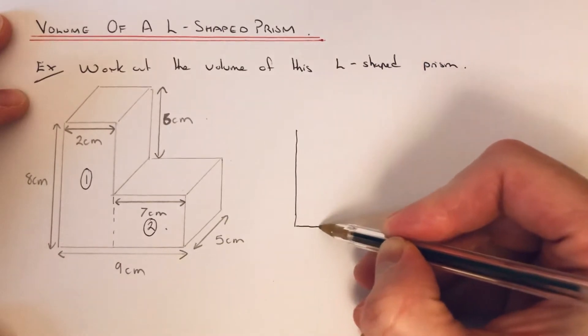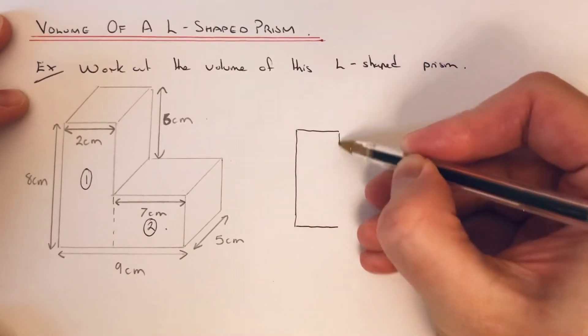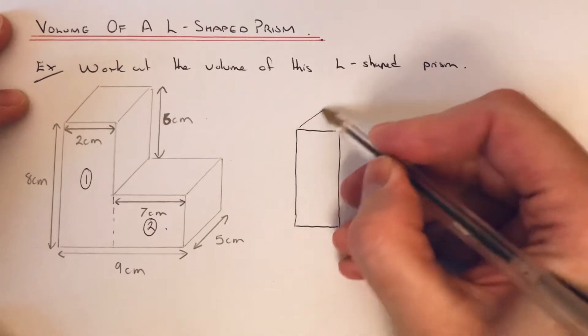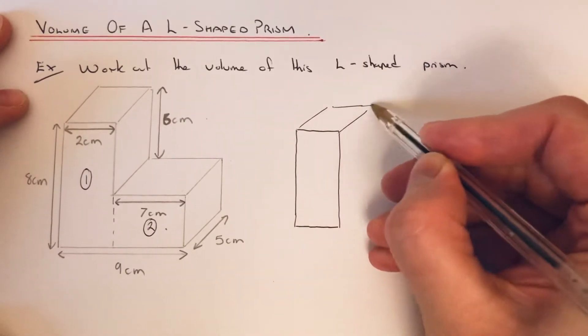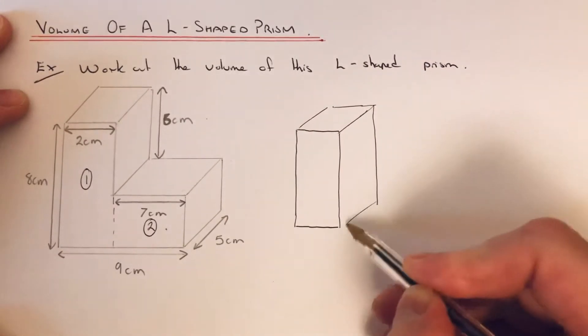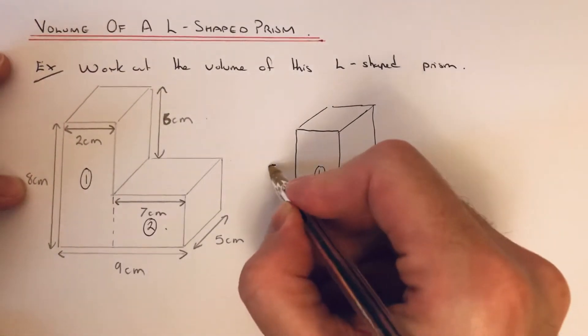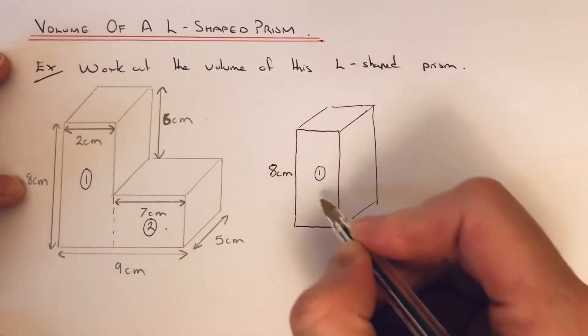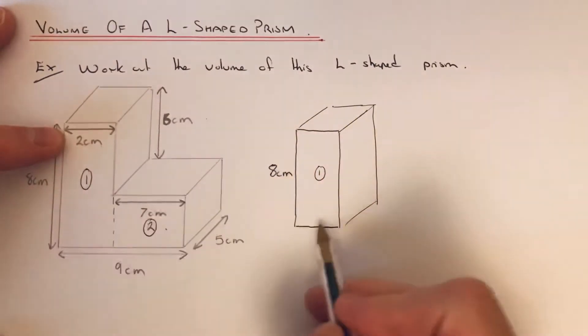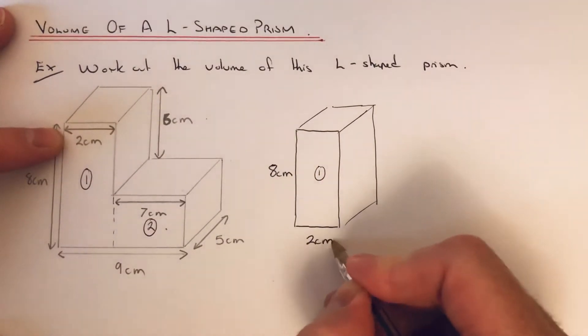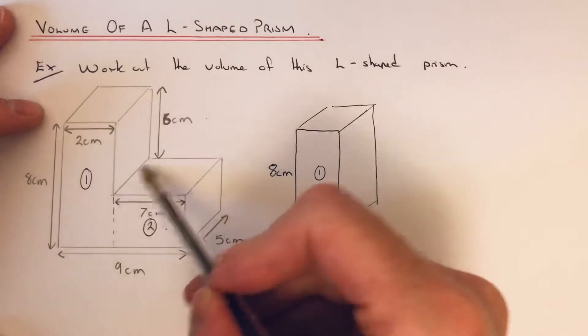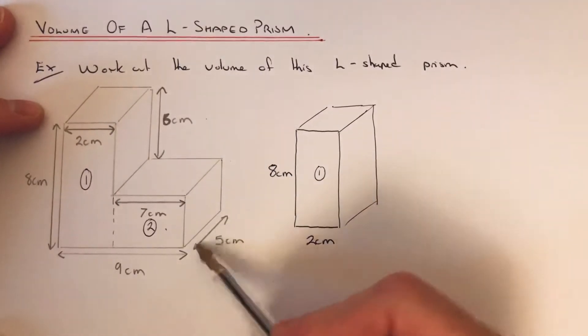Let me just sketch out cuboid 1. Cuboid 1 has a height of 8 centimeters, it has a length of 2, and this length here is this 5 here.